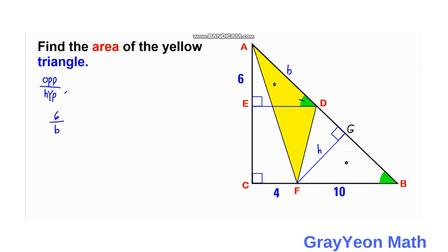With respect to this angle at the bottom for triangle GBF, the opposite is H and the hypotenuse is 10. So we have B times H is equal to 60.